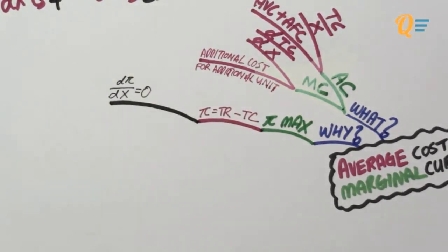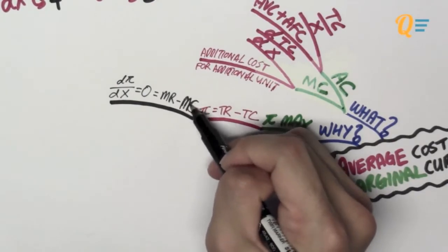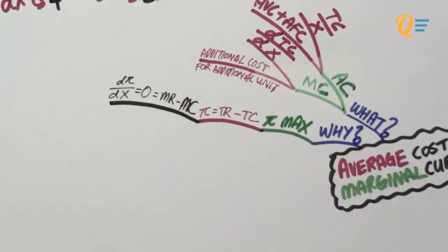So how do I maximize this? I'm going to differentiate the profit with respect to x and equate that to 0 because this is how we maximize functions, right? This is basic math. So I'm going to get MR minus MC. What is MR? MR is my marginal revenue minus my marginal cost. So why is it that I get marginal revenue and marginal cost after differentiating total cost and total revenue?